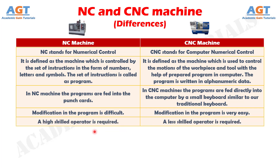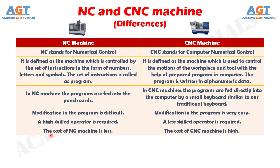Number 5. In NC machine, a high skilled operator is required, whereas in CNC machine, a less skilled operator is required. Number 6. The cost of NC machine is less, whereas the cost of the CNC machine is high.